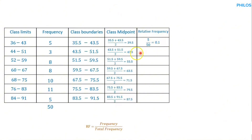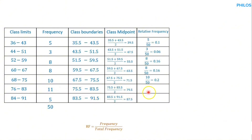Then: 3 divided by 50 gives 0.06. The next: 8 divided by 50 gives 0.16. The same for the next class: 8 over 50 gives 0.16. Then 10 over 50 gives 0.2. Then 11 divided by 50 gives 0.22. And the last: 5 over 50 gives 0.1. When you add all the relative frequencies together, you should get 1, provided your calculations are correct.